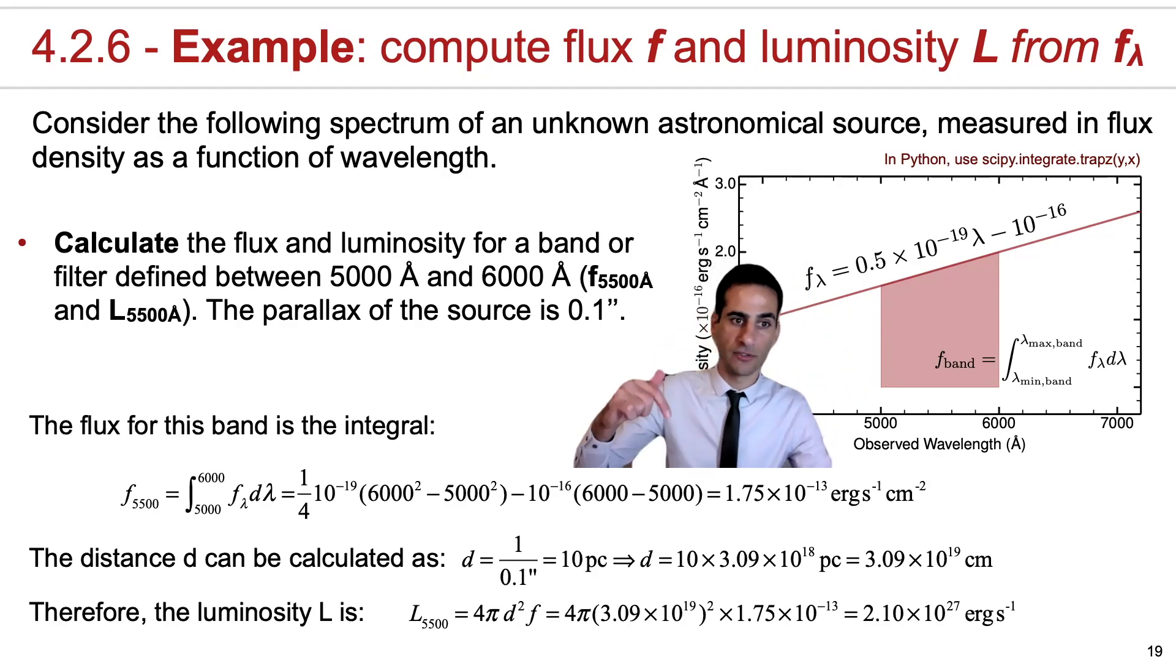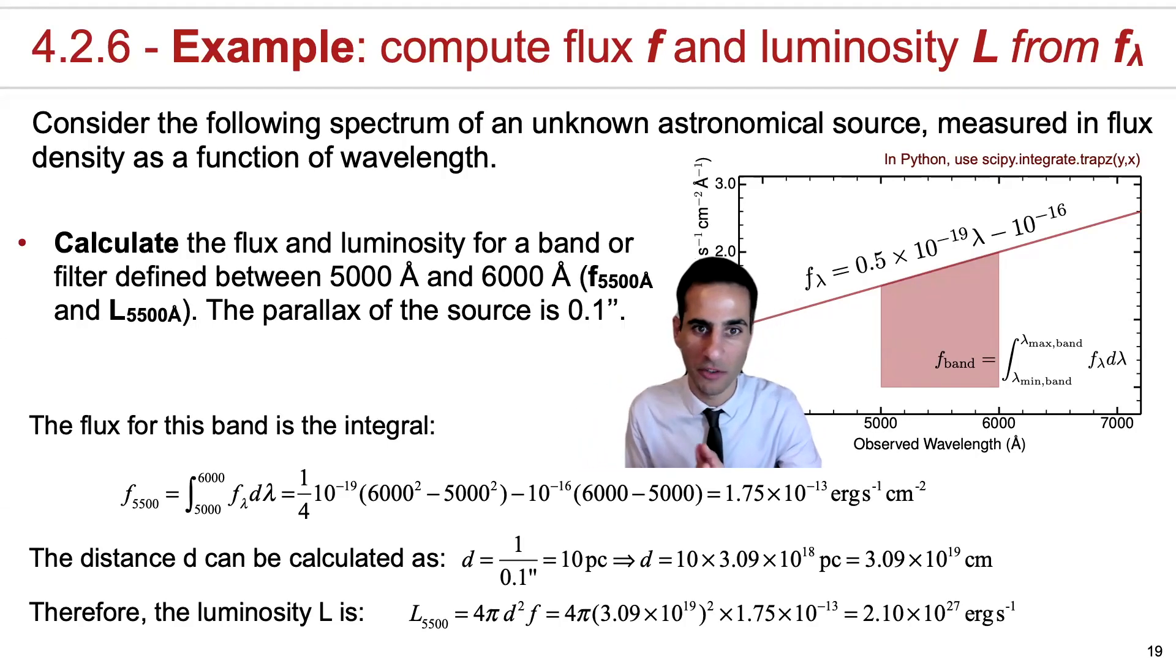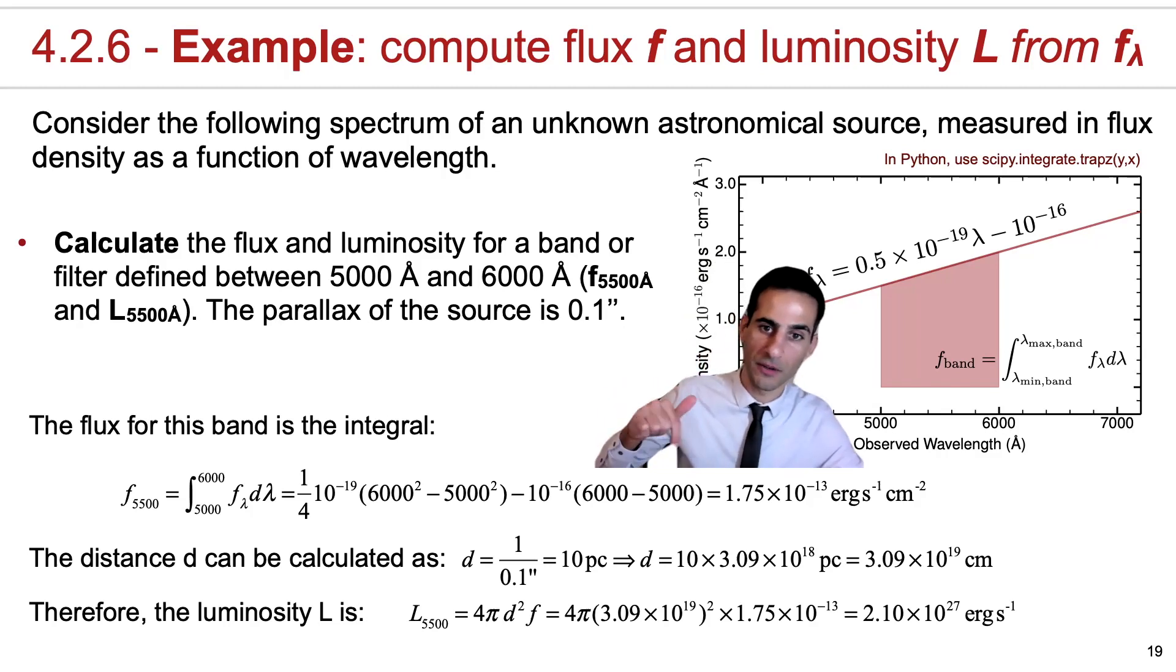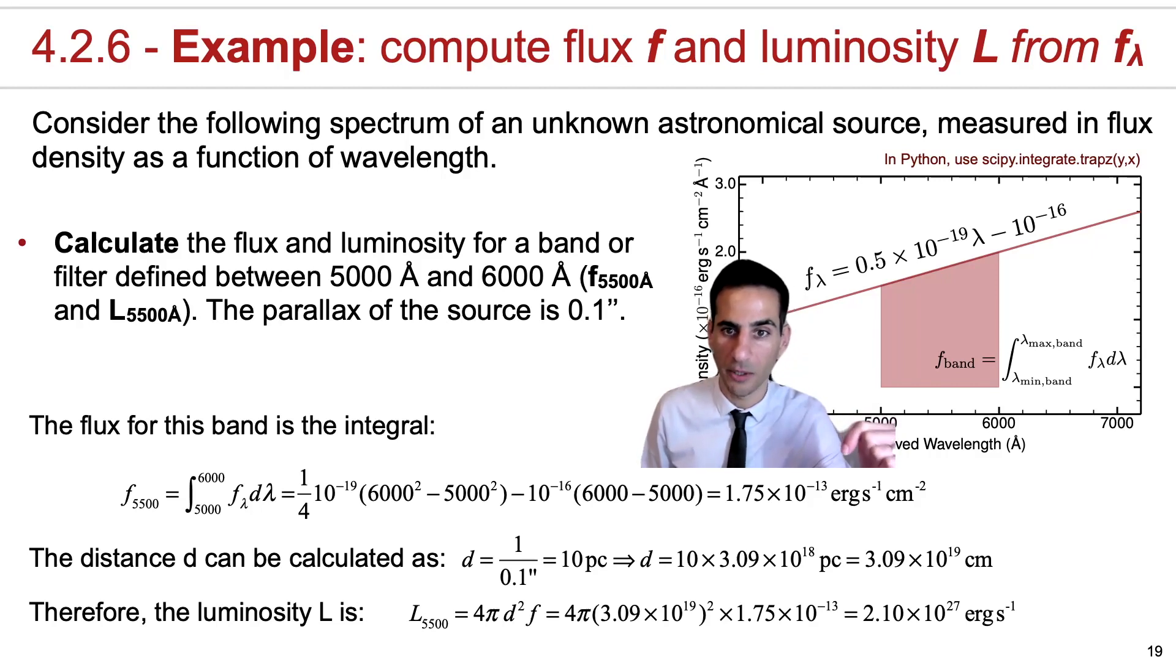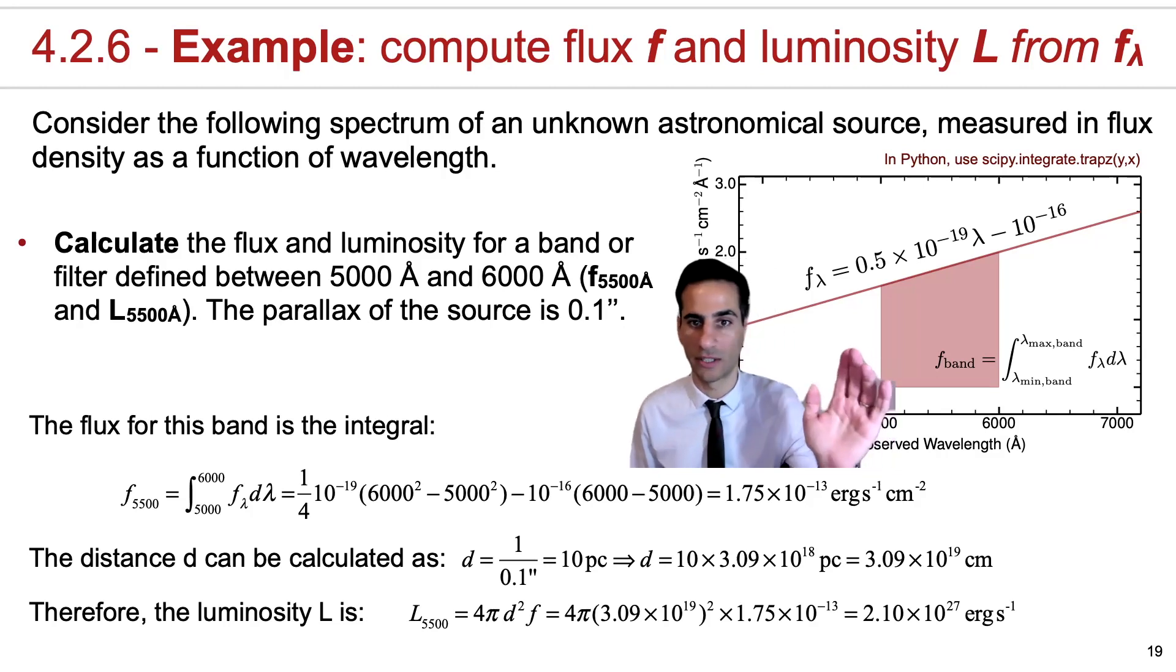Now very simply, if you follow what we've covered so far, the flux for this band is just the integral between 5000 angstrom and 6000 angstrom. Because this is just a linear function of lambda, I hope that 112 is still fresh in your minds, but if not, this is a really simple integral that you can calculate and substitute to get the final answer, which is given as 1.75 times 10 to the minus 13, and this is erg per second per centimeter squared. The reason why we dropped the angstrom is because we integrated it.